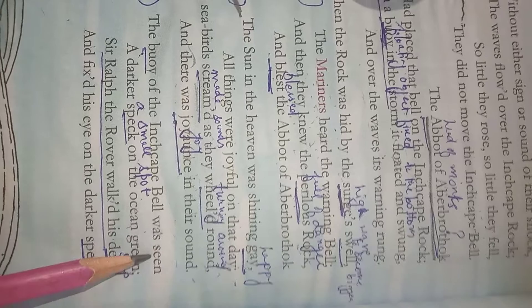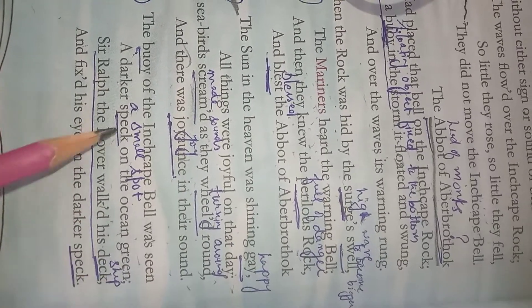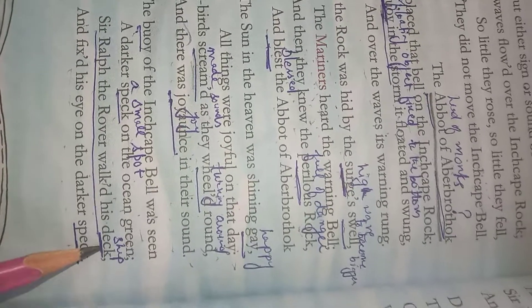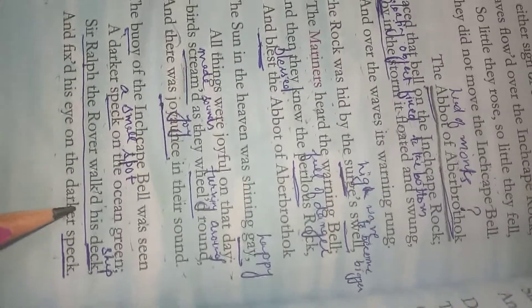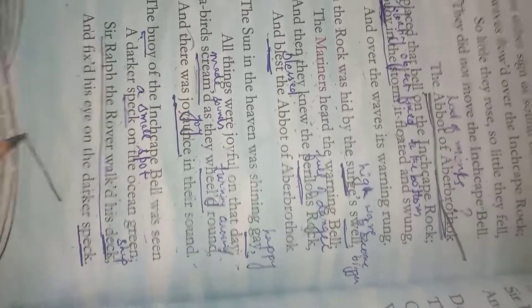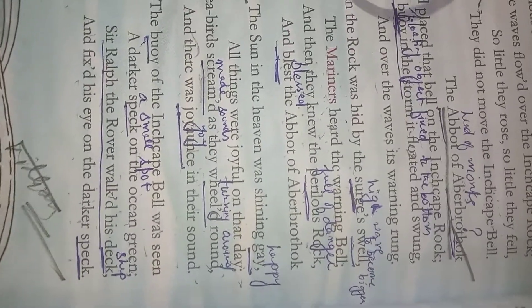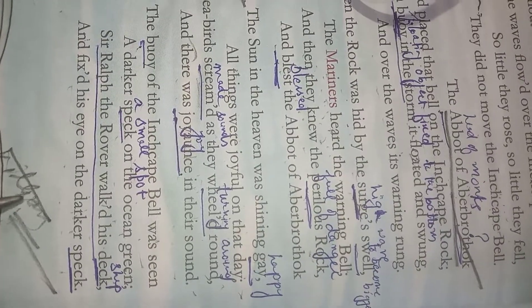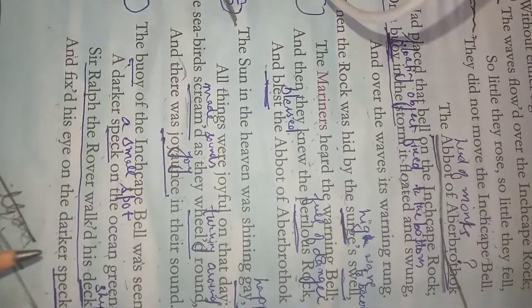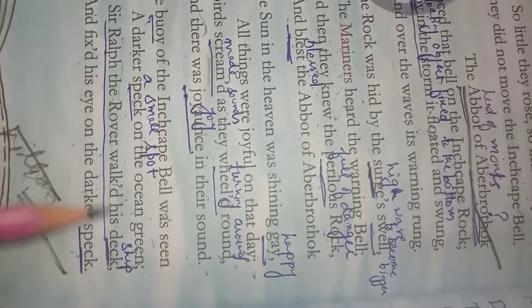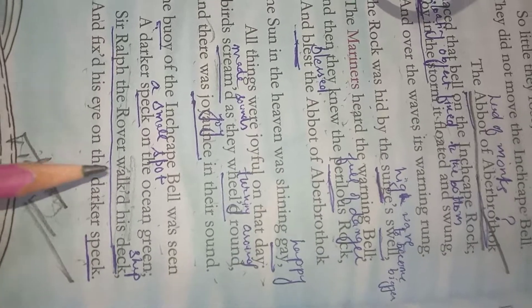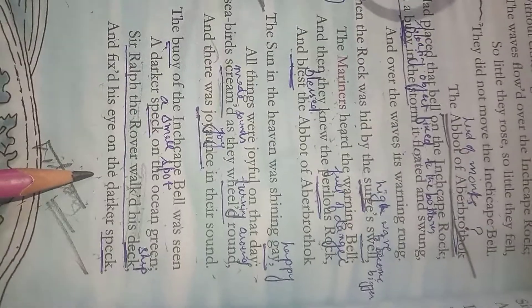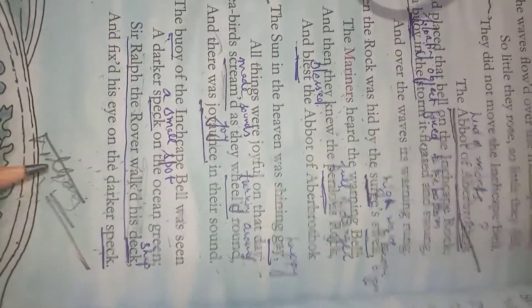Let's see it further. The buoy of the Inchcape bell was seen, a darker speck on the ocean green. Speck means a small sign, a small spot. Sir Ralph the Rover walked his deck and fixed his eye on the darker speck. Deck means ship. So now we get the entry of our villain of the story. The hero of the story is Abbot of Aberbrothok and now there comes the villain, that is Sir Ralph the Rover. He is a pirate actually - pirate is sea rover. From the boat of Sir Ralph the Rover, Inchcape Rock could be seen so far, it seemed as there was a black colored dot in the green sea. A darker speck on the green sea. So from the green sea far away, he could see a small black colored dot. And Sir Ralph the Rover is looking at the rock. He understood this rock is having a bell over it and he also knew this bell was actually hung by Abbot of Aberbrothok.